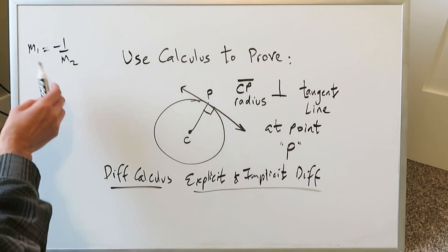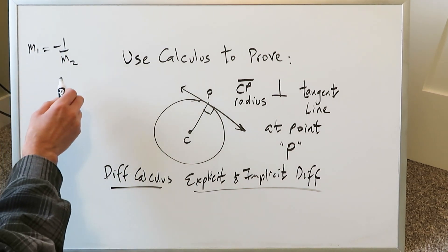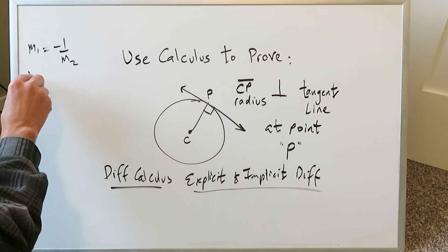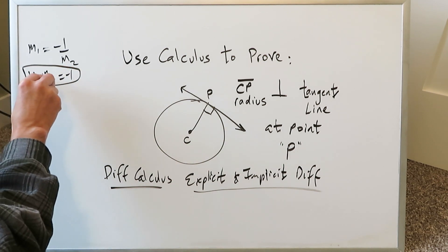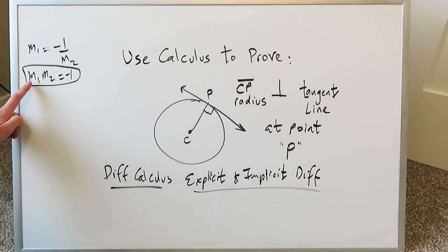M1 would be equal to, in terms of the relationship, minus one over M2, or you can say it in a better way, M1 times M2 would equal minus one. And that's the relationship we need to prove, that the slope of the radius and the slope of the tangent line will give you a minus one. That is, they would be negative reciprocal of one another, utilizing explicit and implicit differentiation.